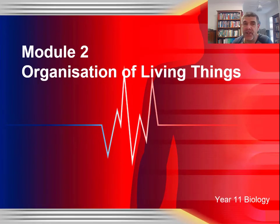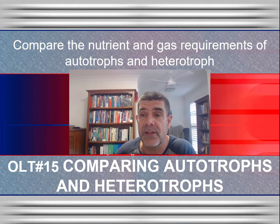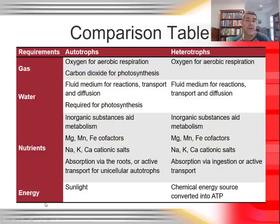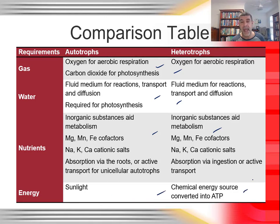Welcome to Year 11 Biology, Module 2: Organisation of Living Things. This is the last in our video series looking at nutrient and gas requirements. We're going to compare the nutrient and gas requirements of autotrophs and heterotrophs. This is a great opportunity to put together a comparison table — a really useful tool that creates individual cells, each of which should be filled, letting you see at a glance whether you've covered all the key things.